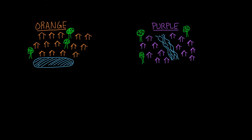Let's say there are two communities: an orange community and a purple community, and they're separate from each other. Your job is to go into these communities and find out what the most common influenza type is that's circulating among the people. You discover something pretty interesting: in the orange community, they really only have influenza type A. There are three types of influenza, and over here, the only one affecting people is type A.